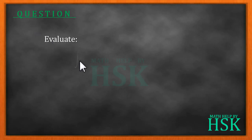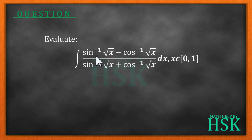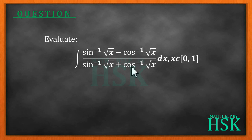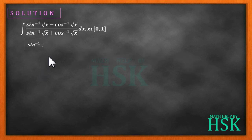The question asks us to evaluate the integral of (sin⁻¹√x - cos⁻¹√x) / (sin⁻¹√x + cos⁻¹√x) with respect to x, where x belongs to the closed interval [0, 1]. Since x is in [0, 1], x is positive and cannot take a negative value — this is a necessary condition, because if x were negative the function would become undefined.